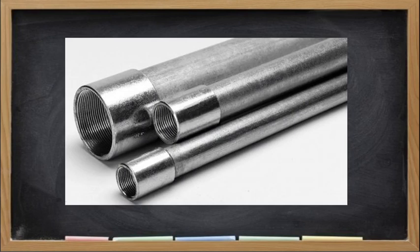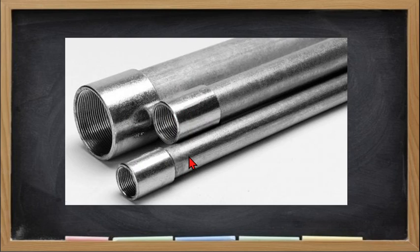This is the appearance of an RMC. This is the coupling, and inside of it is the thread — one end of the RMC which has the thread. It comes in different sizes; the smallest size of a conduit is one-half inch, and depending on the type of conduit, the largest size will depend on its type.